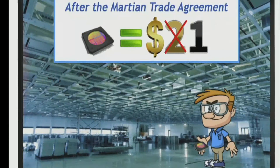John is a memory chip producer. Before Joe went to Mars, John usually sold his memory chips to Joe at $2 per unit. But Joe now gets his memory chips from Martians at $1. To stay in business, John is forced to lower his price to $1 to compete with Martians, otherwise his business will fail.